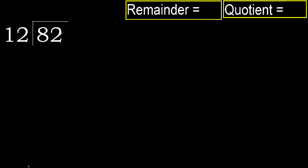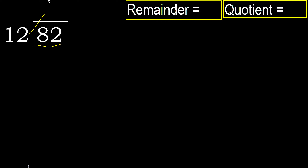82 divided by 12. 8 is less, therefore next. 82 is not less, therefore with 82 and 12 we proceed.